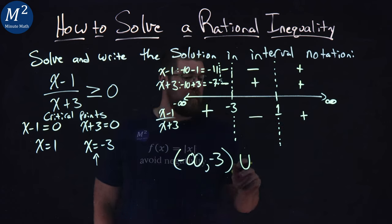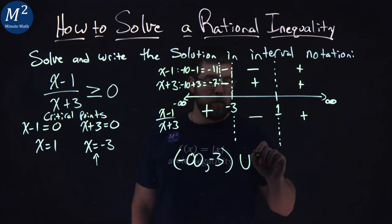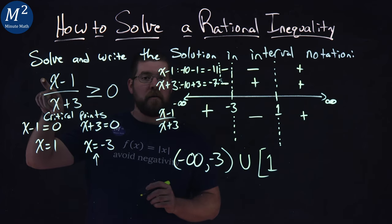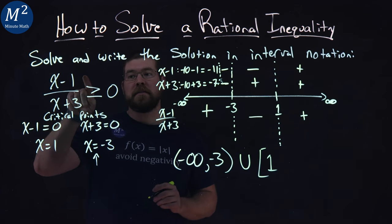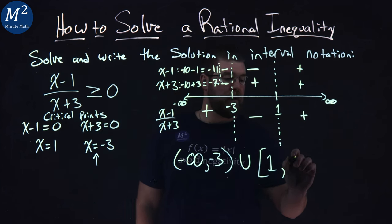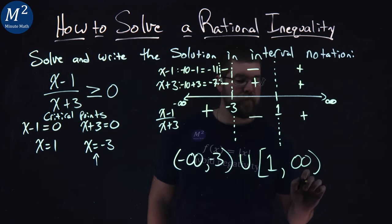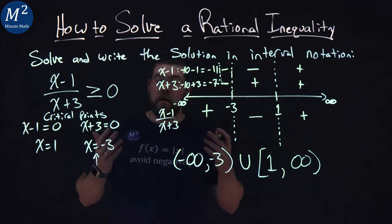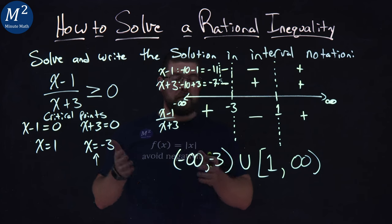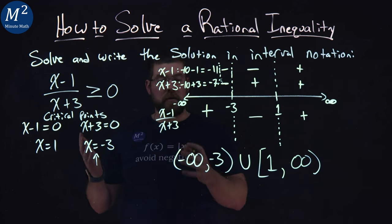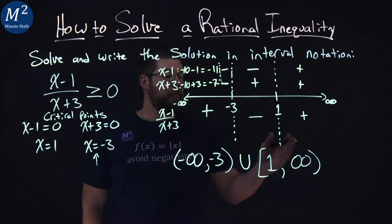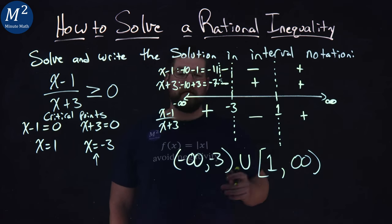But then positive 1 we can equal, right? Positive 1 up here makes the numerator equal to 0, and we said it's greater than or equal to 0. So we can equal 1 to positive infinity. And infinities always have parentheses anyway. So there we have it. We've solved our solution in interval notation for this inequality, and x can be between negative infinity and negative 3, not including negative 3, and from 1, including 1, to positive infinity.